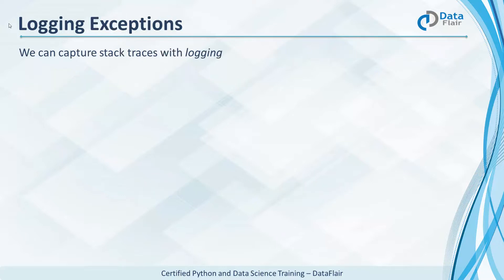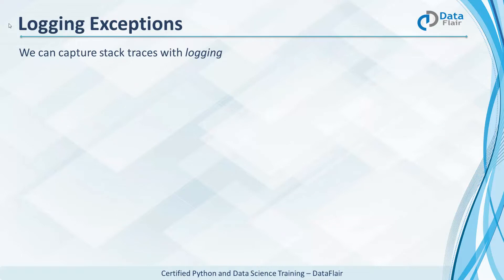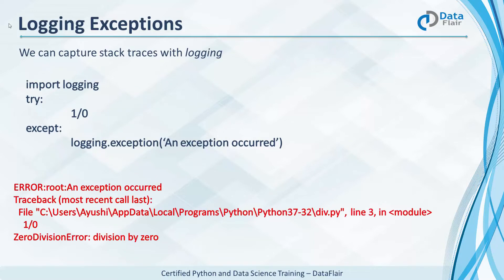When an exception is raised, we can capture the stack trace and log it. Here we divide by zero. The except block handles it, making a call to exception, and that prints out the entire traceback.